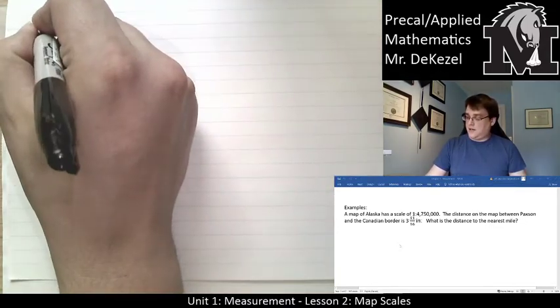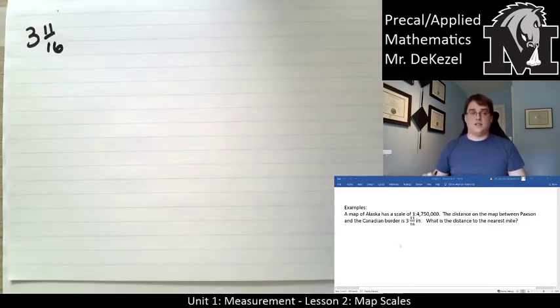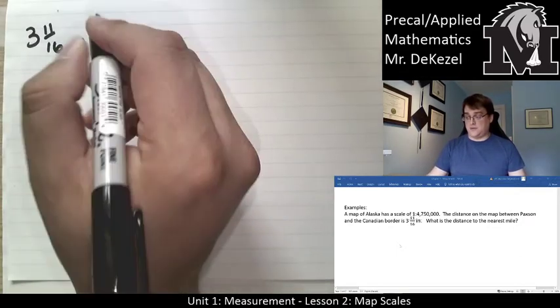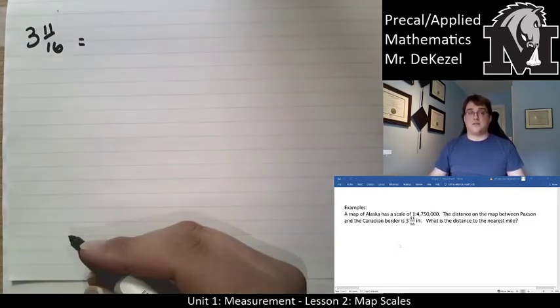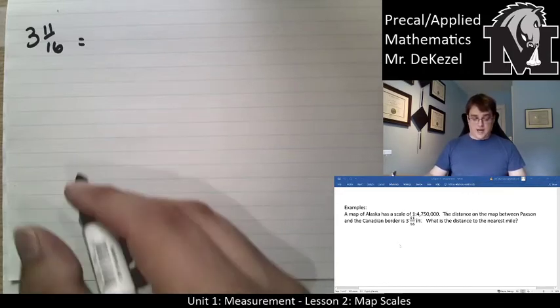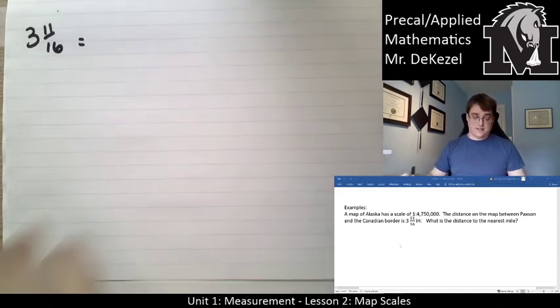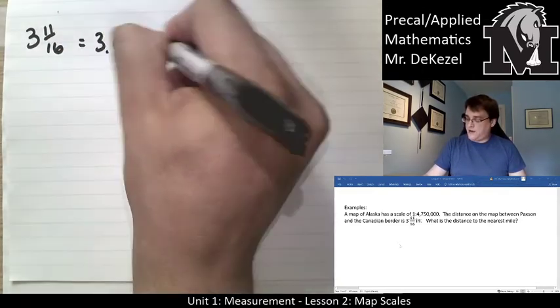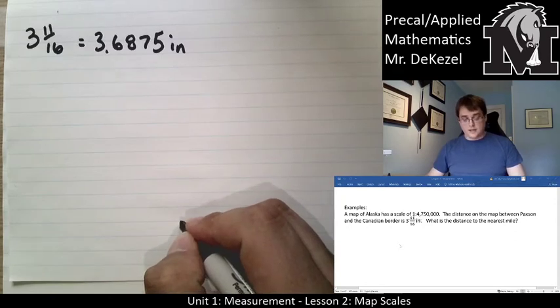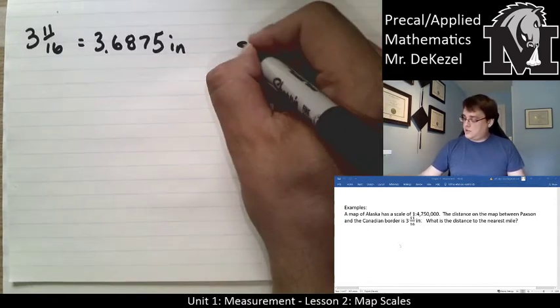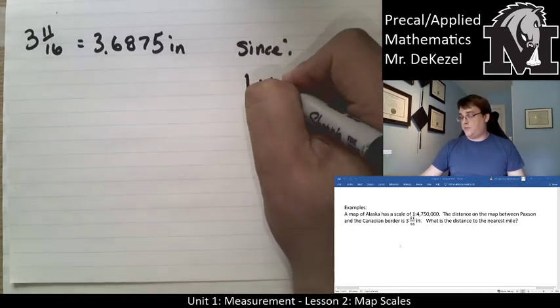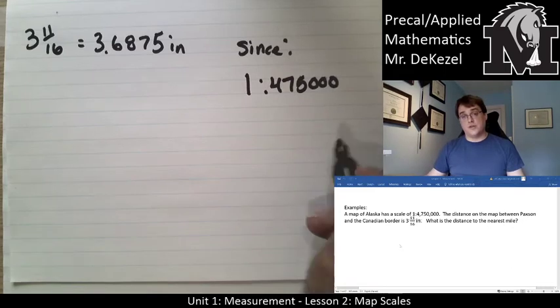These mixed numbers are really unhelpful format for doing mathematics, so we're going to turn that into a decimal. If I punch 11 over 16 into my calculator, I'm going to get 0.6875, so that would be 3.6875 inches. And since one inch is equal to 4,750,000 inches according to the map...